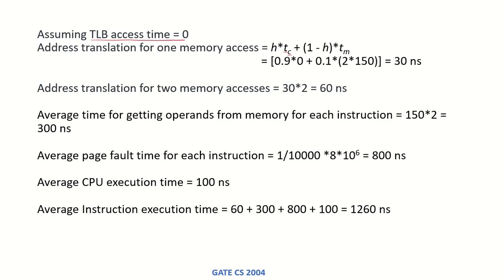The address translation time for one memory access is: hit rate × TLB access time + miss rate × page table access time in memory. So: 0.9 × 0 + 0.1 × (2 × 150) = 0 + 30 = 30 nanoseconds. The miss rate is 0.1 (i.e., 1 − 0.9), and memory is accessed twice because it is a two-level page table, so we multiply 150 by 2.